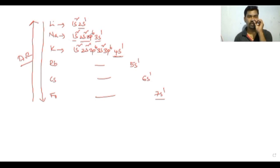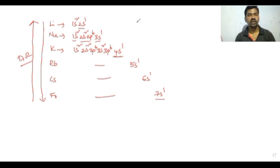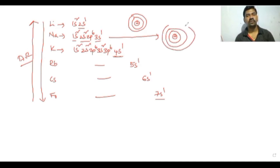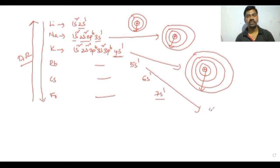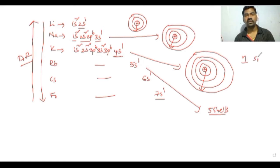So, as we go down the group, the atomic radius increases from the first shell, to the second shell, to the fourth shell, and so on — the distance increases gradually. According to the principal quantum number, as the n-value increases, size increases.